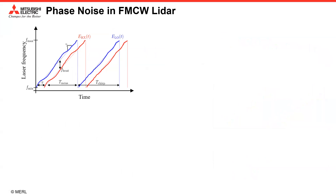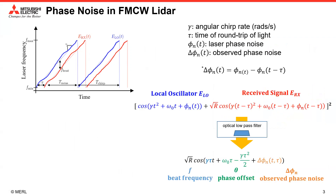One of the most prominent noise sources in FMCW LiDAR is the phase noise from the laser source. Typically, the laser phase noise is approximated as a Wiener process since we assume white frequency noise. The high-frequency component yielded by the interference is suppressed by an optical low-pass filter. This gives us the signal with beat frequency and phase offset that are a function of chirp rate and time delay. With laser phase noise taken into consideration, the phase noise in the interference signal will be the time-delay difference of the Wiener process, denoted as delta phi.